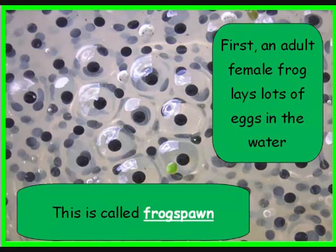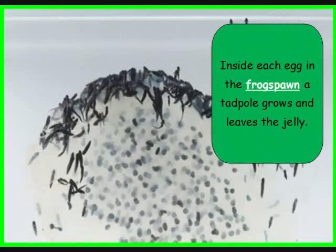First, an adult female frog lays lots of eggs in the water. This is called frog spawn. Inside each egg in the frog spawn, a tadpole grows and leaves the jelly.